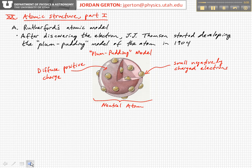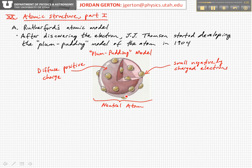Conceptually it looks like this: you have some sort of diffuse positive charge, which is the pudding, and then you have small negatively charged electrons which are kind of embedded in maybe some ring structure, some layered structure in the pudding. The whole thing together is electrically neutral, but the only discrete charges in this model are the electrons, which are embedded in this diffuse positive pudding.